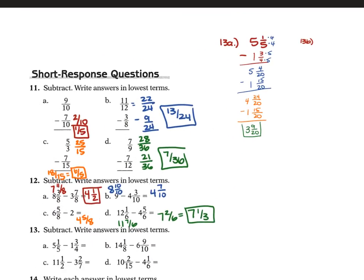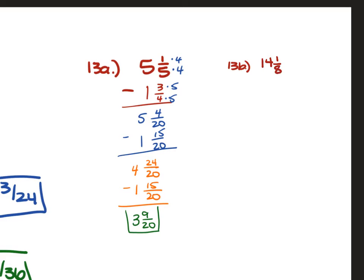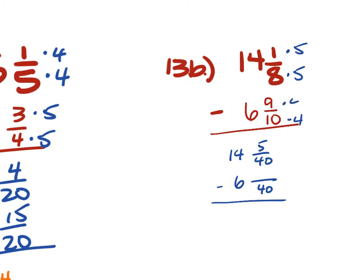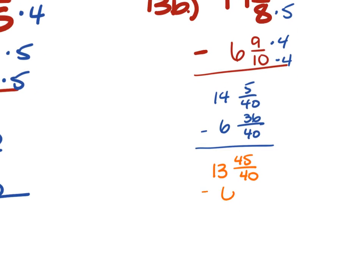For 13B, 14 and 1 eighth minus 6 and 9 tenths: LCD is 40, converting to 14 and 5 over 40 minus 6 and 36 over 40. Since 36 is greater than 5, regroup to 13 and 45 over 40. Then 13 minus 6 is 7, and 45 minus 36 is 9 over 40 — answer is 7 and 9 over 40.